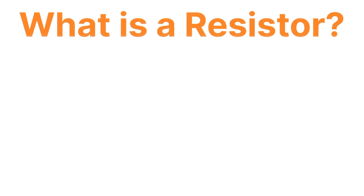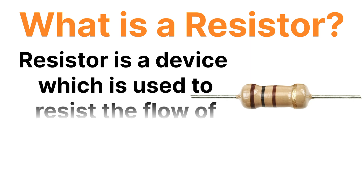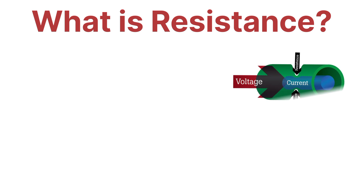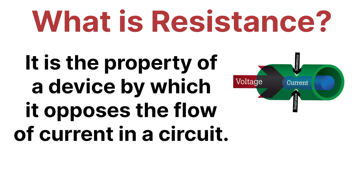So what is a resistor? A resistor is a device which is generally used in a circuit to resist the flow of electric current. And what is resistance? Resistance is the property of a device which opposes the flow of current through the circuit.